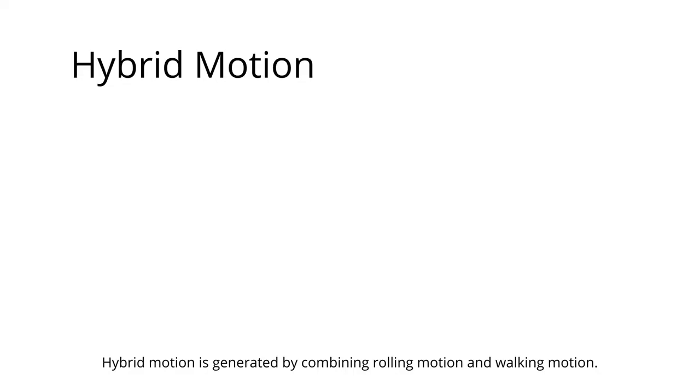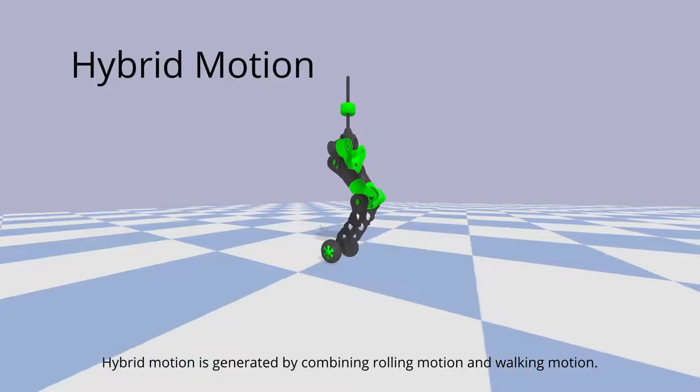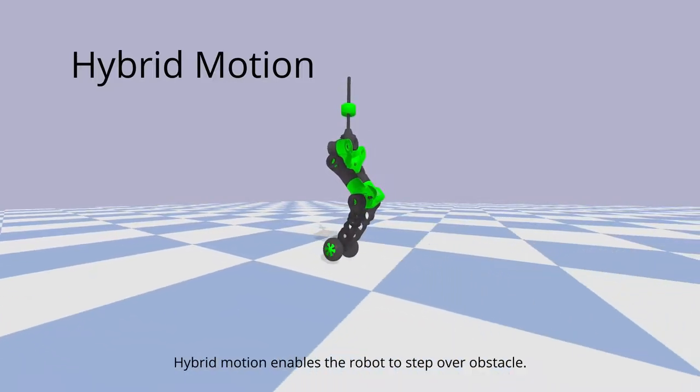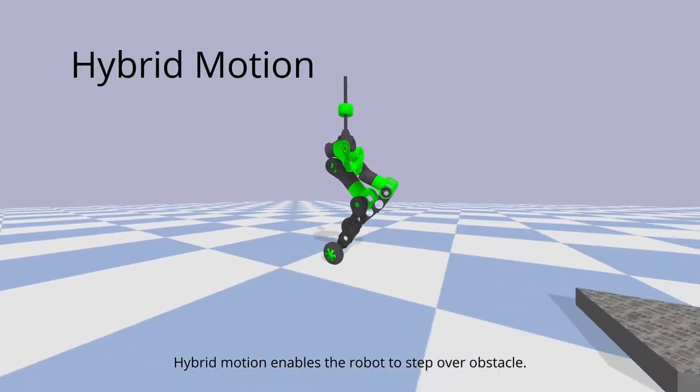Hybrid motion can be generated by combining the previously demonstrated rolling and walking motions, which enables the robot to step over obstacles.